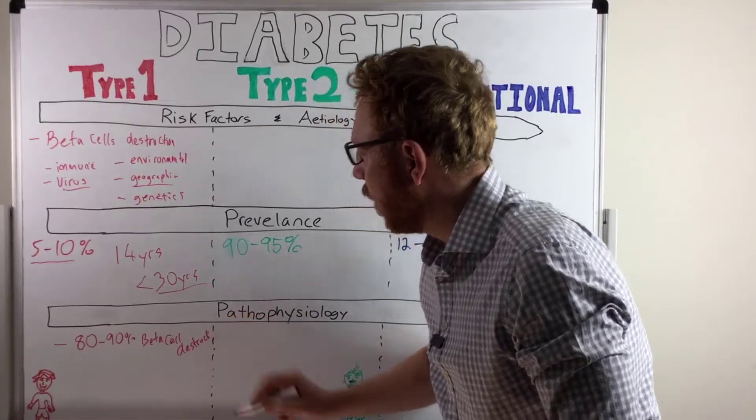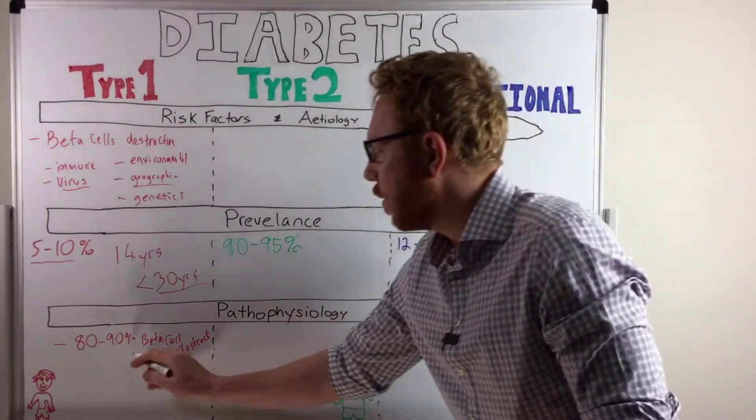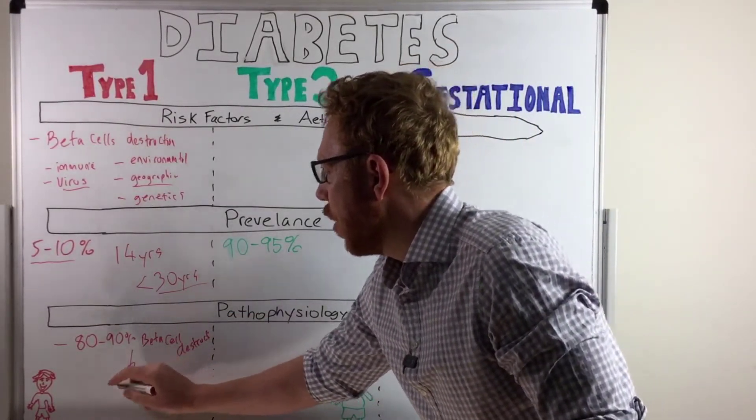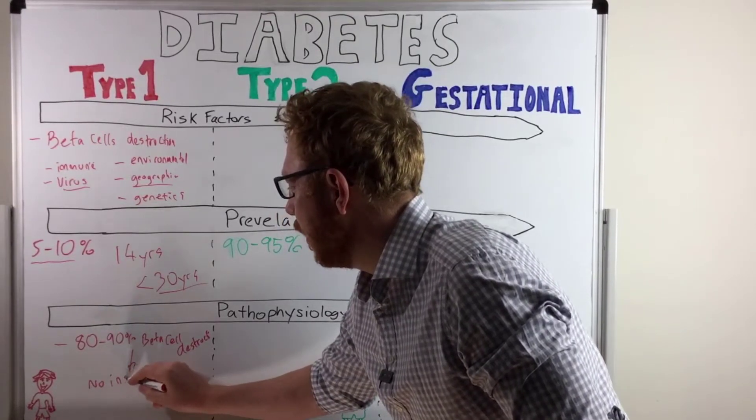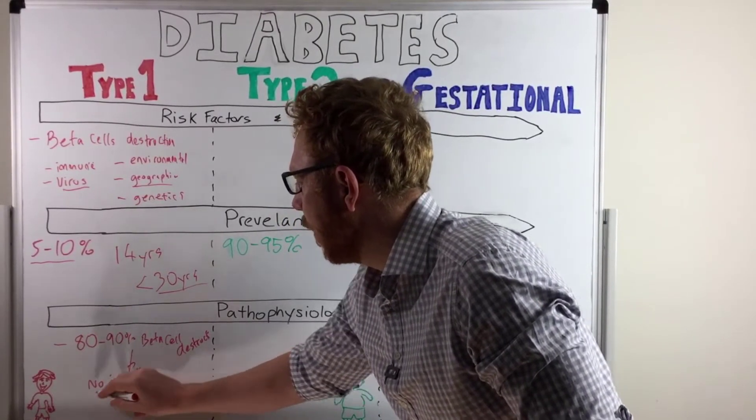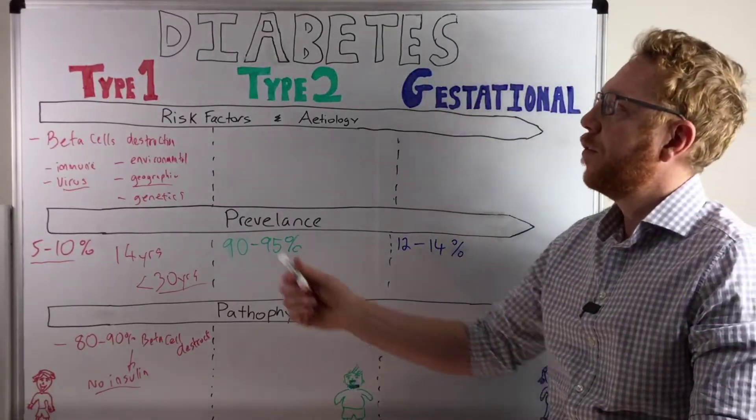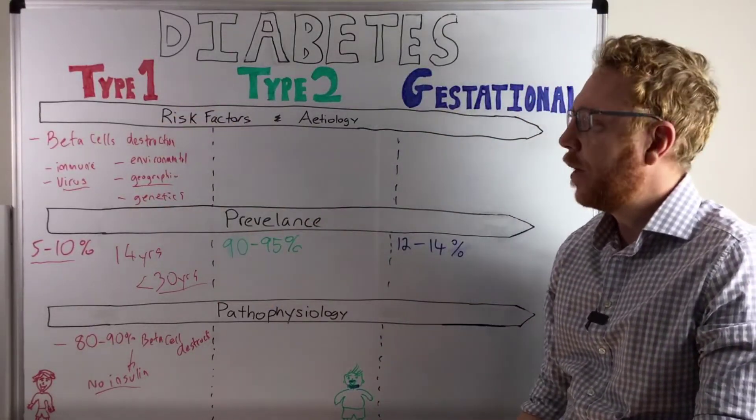As a result, there is now no insulin. So there's now no insulin in the body. And that's why traditionally it was referred to as insulin-dependent diabetes mellitus.